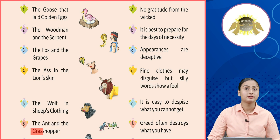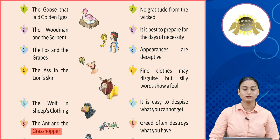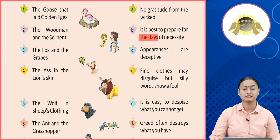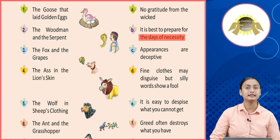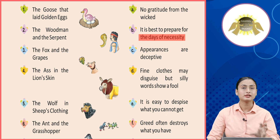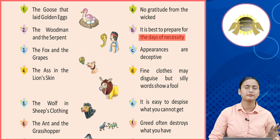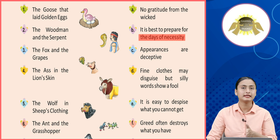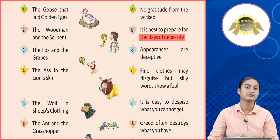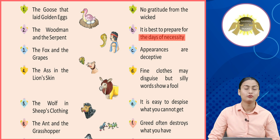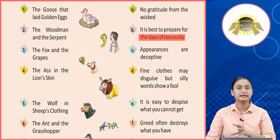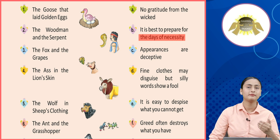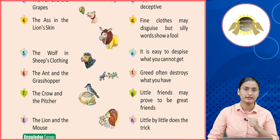Number six: The Ant and the Grasshopper. Is story se hume seekhne ko milta hai: It is best to prepare for the days of necessity. Yani ki is story mein jo grasshopper tha, woh puri garmiyan aram se baitha raha, kuch nahi kiya. Lekin jo ant thi, woh mehnat se apne ghar mein khana dhire dhire jamaa karti rahi, taaki sardiyon mein usse dikkat na ho. Toh isse hume seekhne ko milta hai ki zaroorat ke time ke liye advance mein cheezein prepared rakhni chahiye.